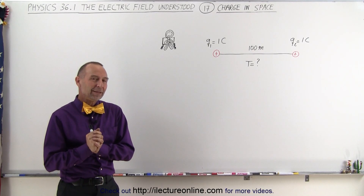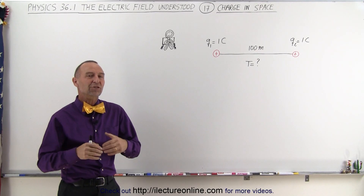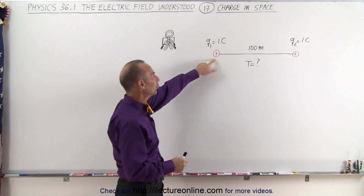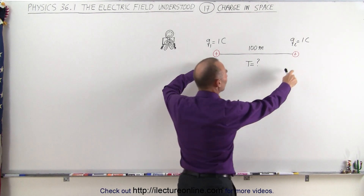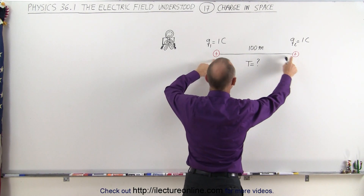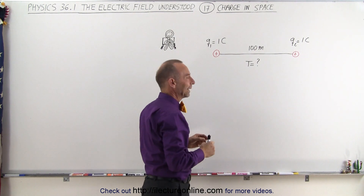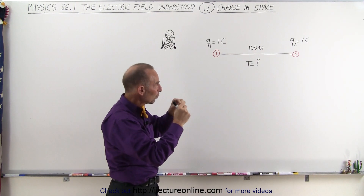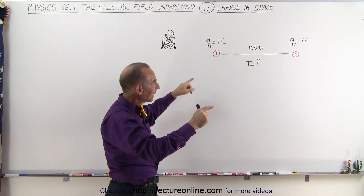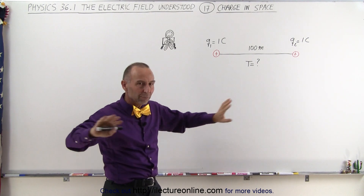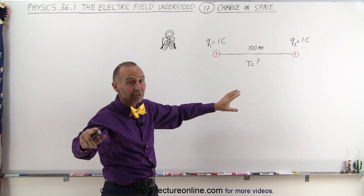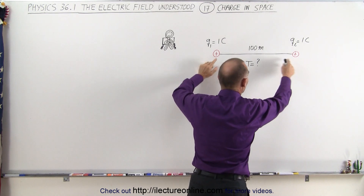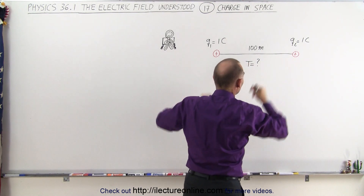Welcome to Electron Line. Now let's do an experiment in space. Let's have two objects, two spheres, that have additional charge on them equal to one Coulomb. And they're connected with a string or a rope that's 100 meters long so that they can move apart from one another 100 meters, because obviously since they are both positively charged they will repel one another.